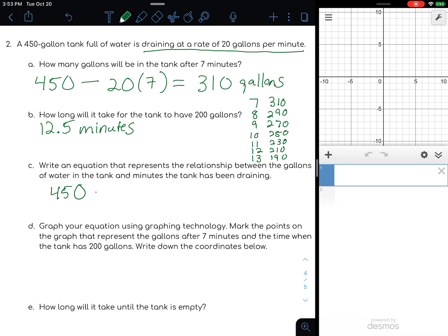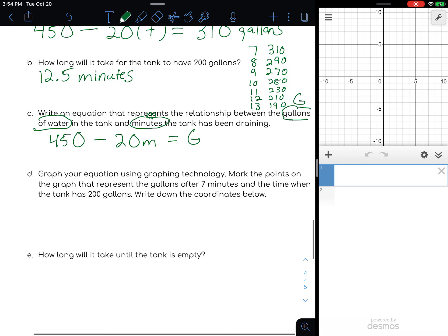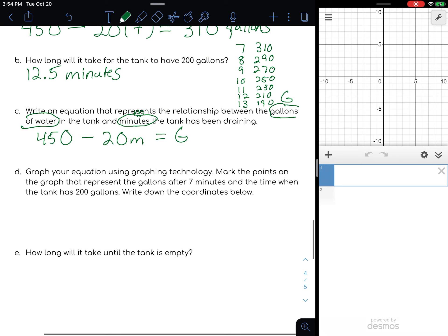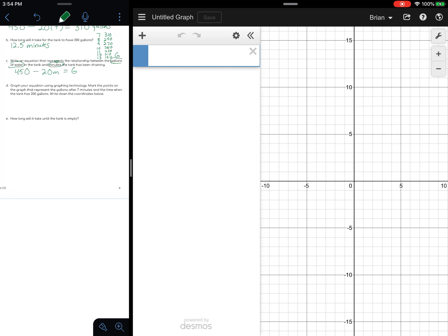Part c: Write an equation that represents the relationship between gallons of water in the tank and the minutes it's been draining. We started with 450, we're subtracting 20 gallons per minute. Minutes is changing, let's call that M, and the gallons of water left, let's call that G. So 450 minus 20M equals G. Let's graph that and mark the points.